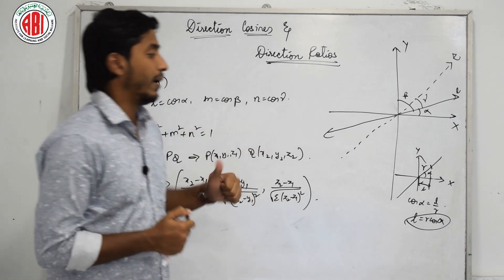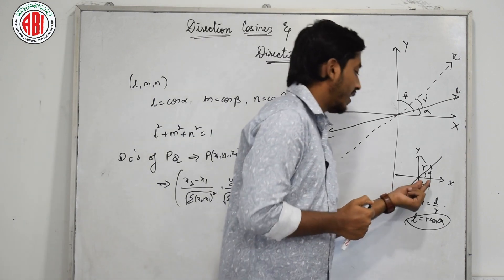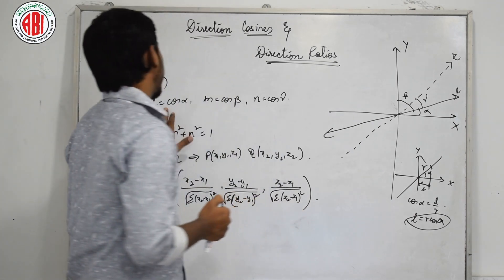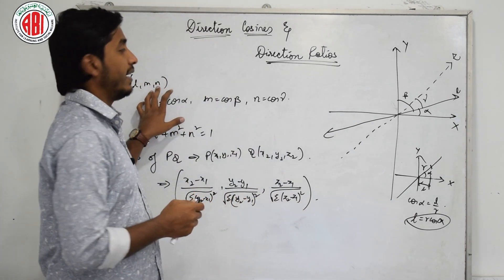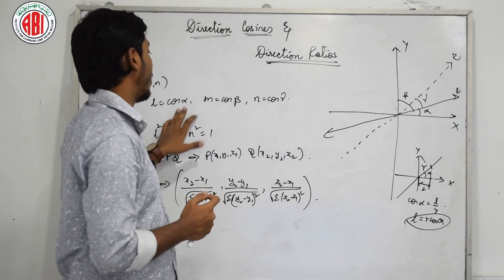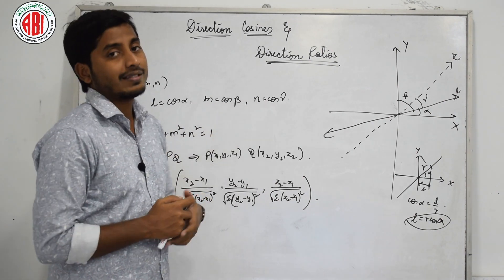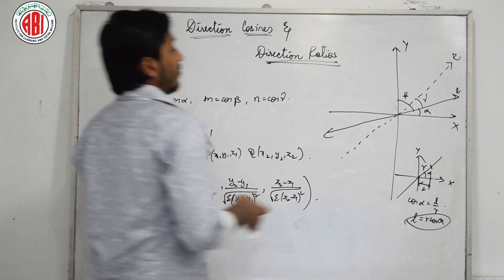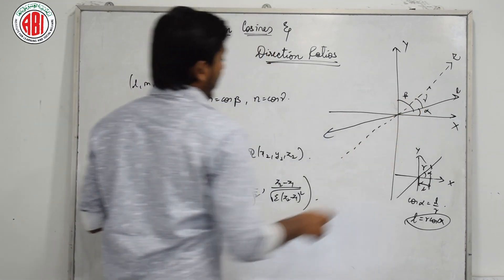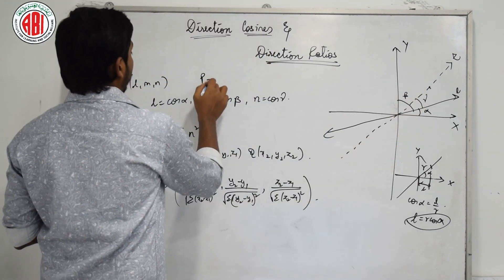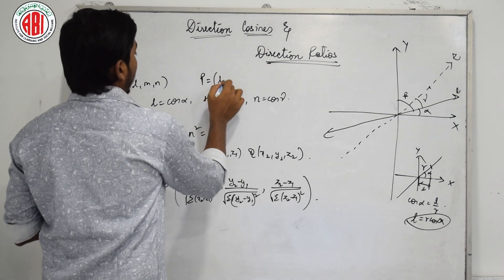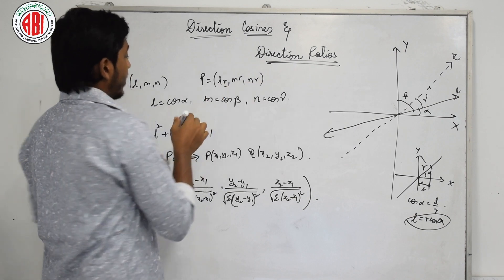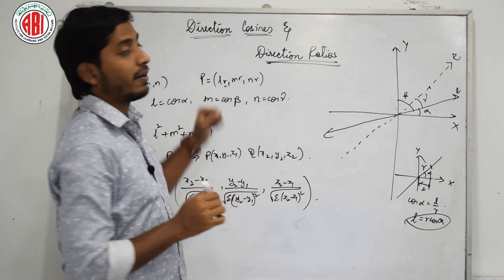Why only cosine? Because with cosine only we will get the value of the adjacent side. If LMN are DCs, then they are nothing but cos alpha, cos beta, and cos gamma. If these are the direction cosines, then the coordinates of the point on that line at distance R from the origin will be LR, MR, NR, where R is the distance of that particular point from the origin.